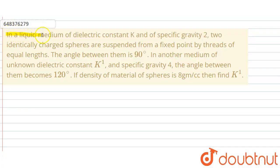It is given that in a liquid medium of dielectric constant K and specific gravity 2, two identically charged spheres are suspended from a fixed point by threads of equal length. The angle between them is 90 degrees. In another medium of unknown dielectric constant K' and specific gravity 4, the angle between them becomes 120 degrees. If the density of the material of the sphere is 8 gram per cc, then find K'.